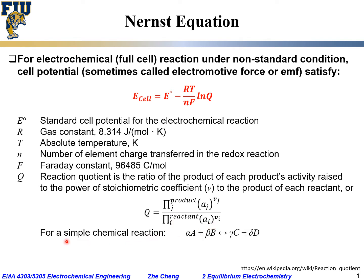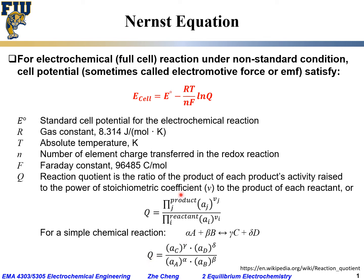Using the example of a simple electrochemical reaction: αA + βB → γC + δD. Here A and B are the reactants, C and D represent the products. Alpha and beta are the stoichiometric coefficients for the reactants, while gamma and delta represent the stoichiometric coefficients for the two products.